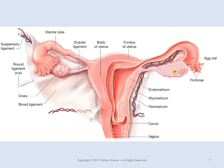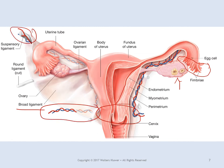Here you can see the ovary, the fimbriae — those frond-like projections on the end of the fallopian tube — and the fallopian tube leading down into the uterus. The inner lining of the uterus is the endometrium. The cervix is the neck of the uterus. You can also see large ligaments that suspend the uterus and hold the uterine tube and ovary in place, along with some pretty large blood vessels. If a ligament were to rupture, the patient has a very good chance of bleeding out before they can be treated.